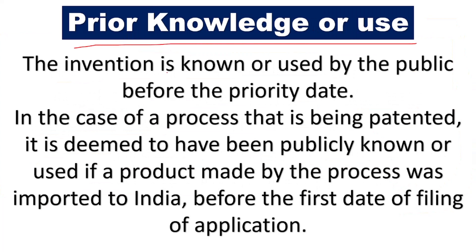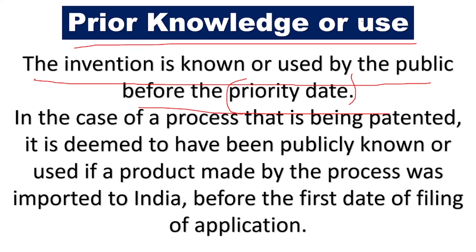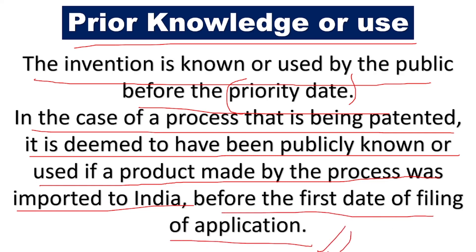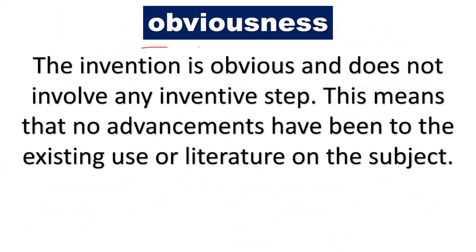The next ground is prior knowledge or use — the invention is known or used by the public before the priority date. Before you filed the application, if the public already knew about that invention or were already using it, they can put forward a pre-grant opposition. In the case of a process that is being patented, it is deemed to have been publicly known or used if a product made by the process was imported to India before the first date of filing of the application.